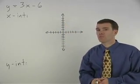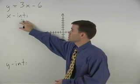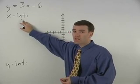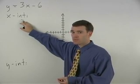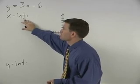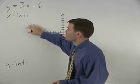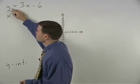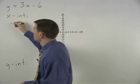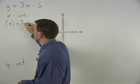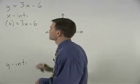Remember from the previous example that all x-intercepts have a y-coordinate of 0. So to find the x-intercept of our line, we simply plug a 0 in for y and we have 0 equals 3x minus 6.